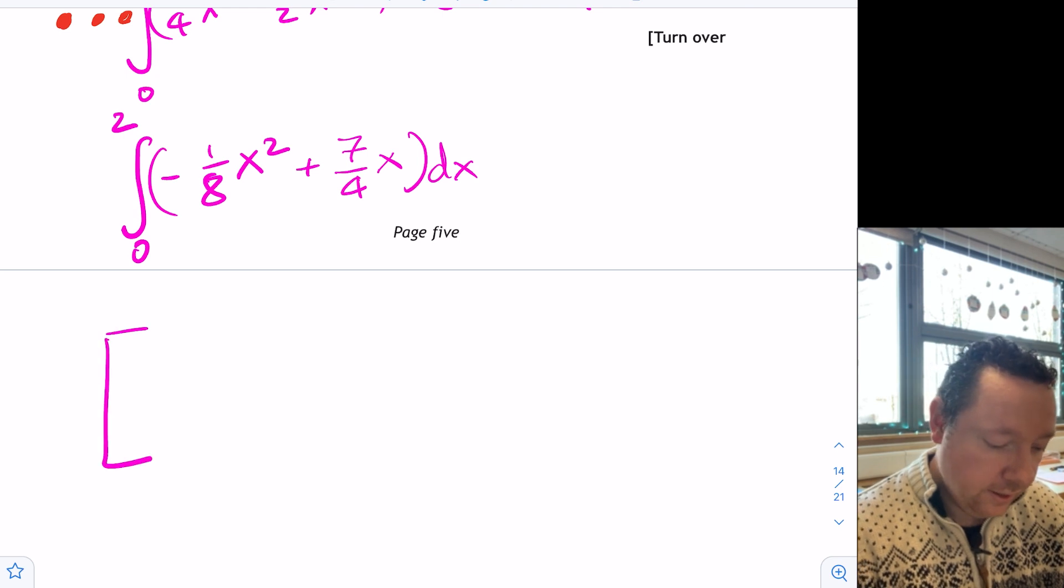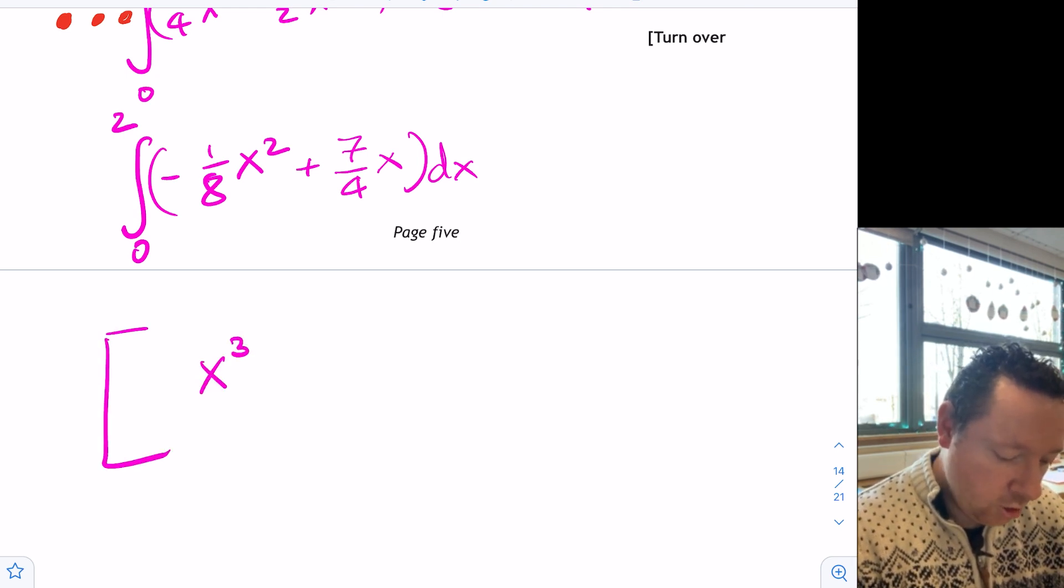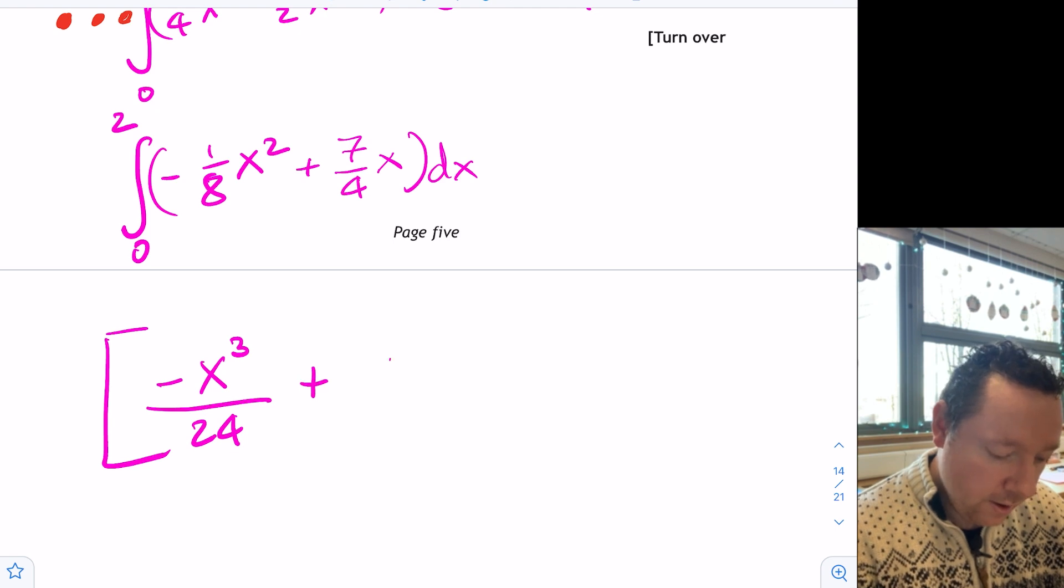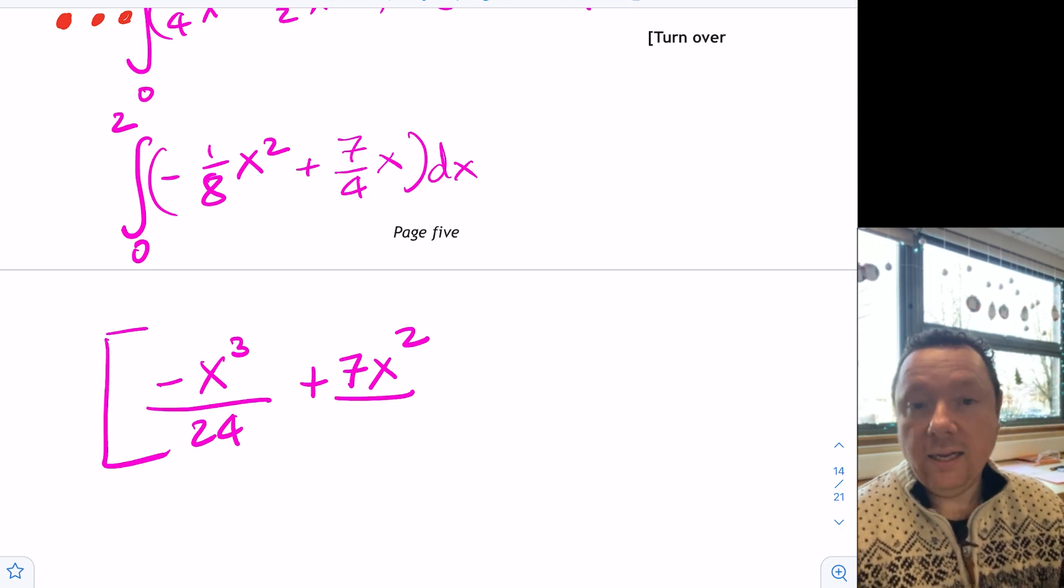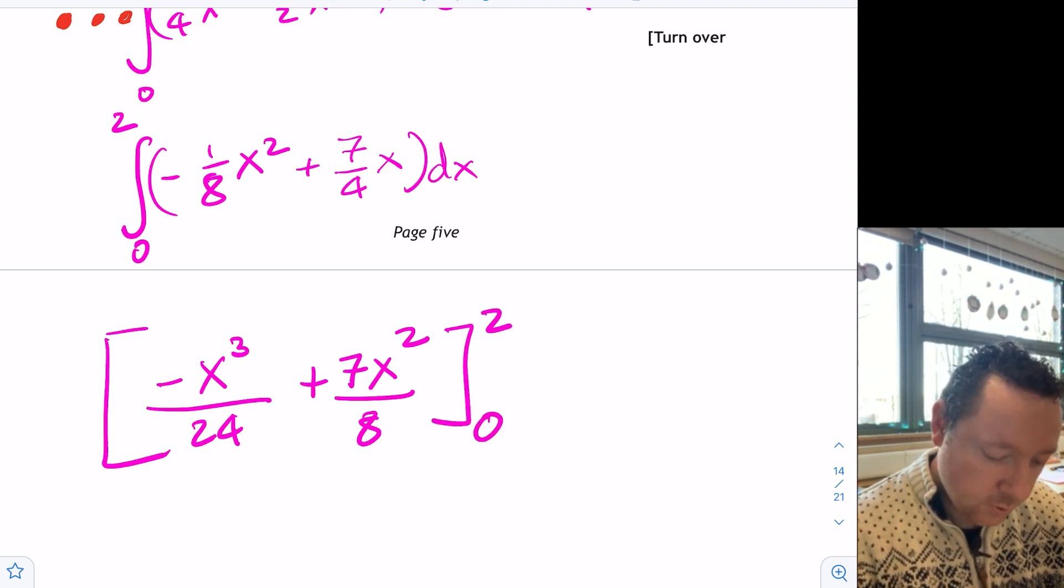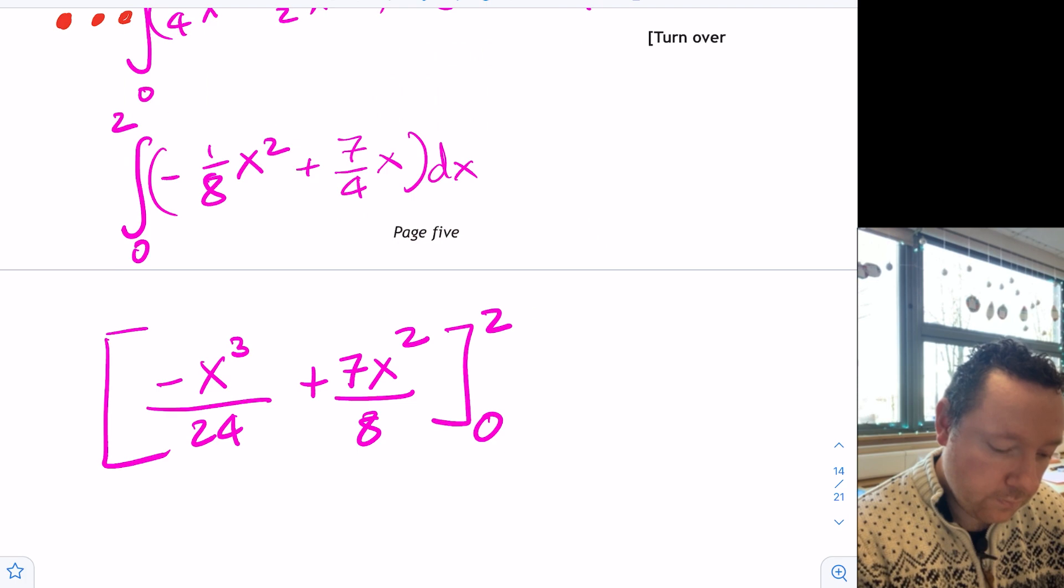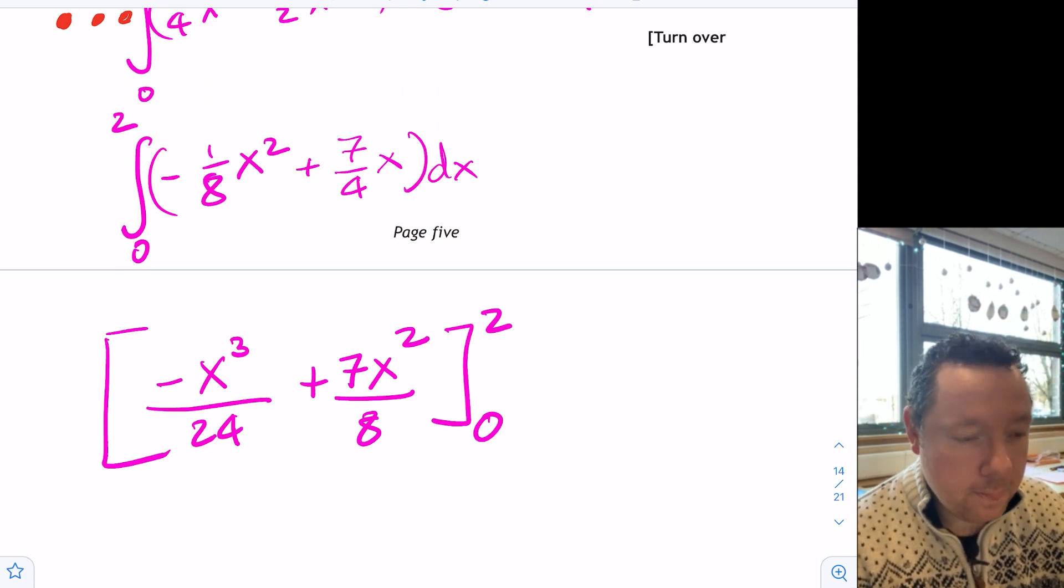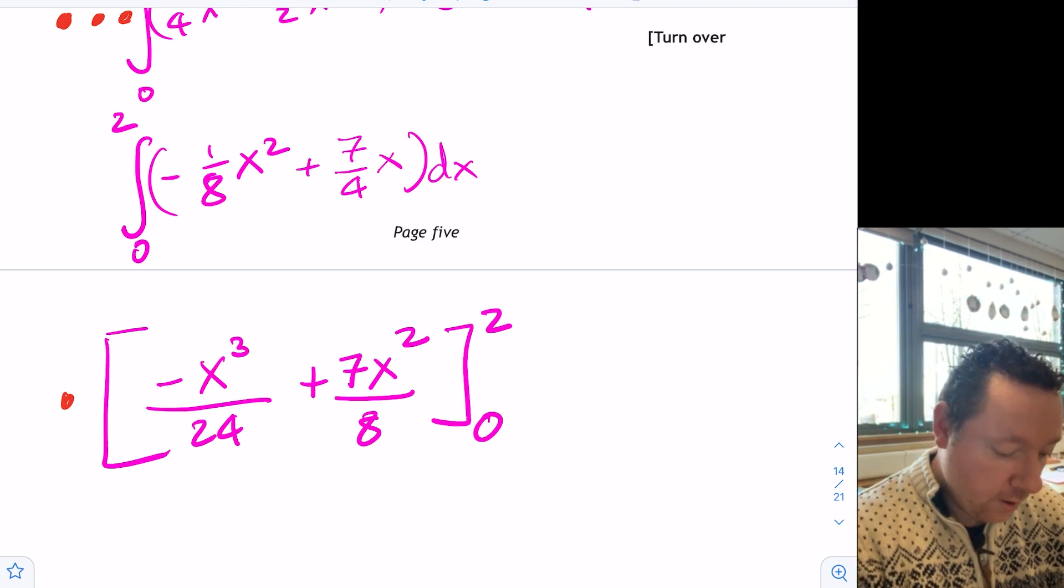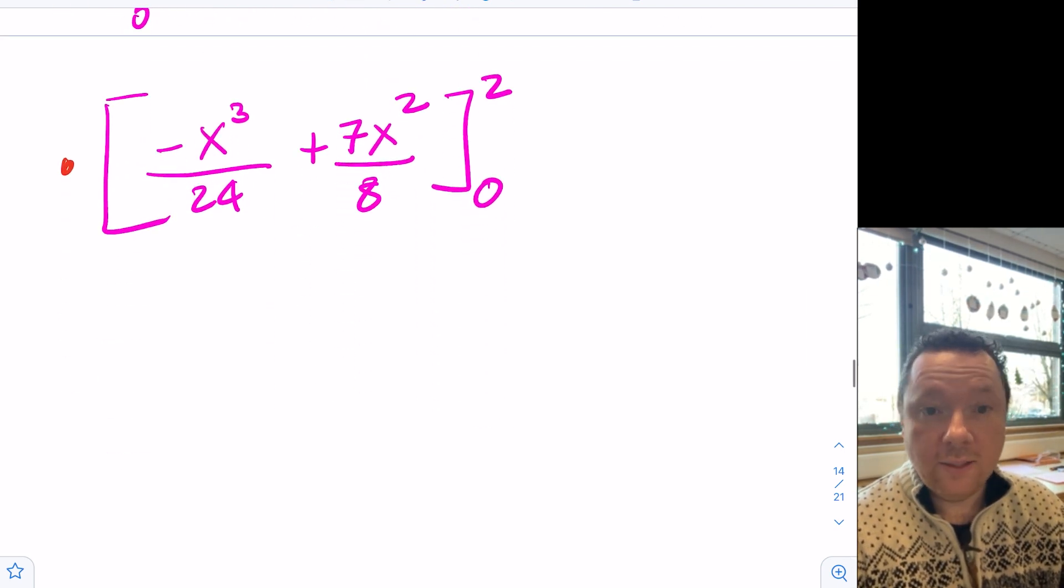And then we need to integrate it. So that gives us x cubed. Add one to the power and divide by the new power. So three times eight I need to do, which is 24. And then plus x squared. I've got seven still. But I need to divide by two. So I've got four already on the bottom. So four times two is eight. And that's between zero and two. So that gives us another mark at that point.